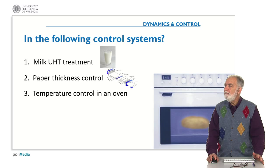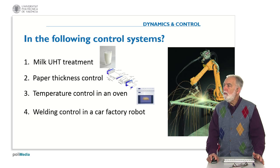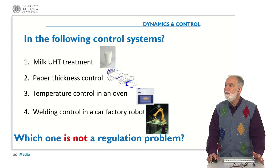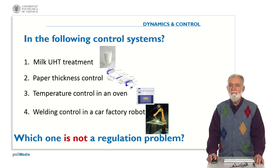Also the control of temperature in an oven, or the welding control in a car factory robot. The question is: in these control systems, which one is not a regulation problem? You must think about the properties of regulation — the main characteristic is to reject disturbances, not to follow any reference. Okay, think about that, please.